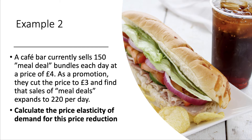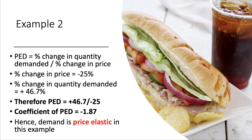Second example: a café bar currently sells 150 meal deal bundles each day at a price of £4. As a promotion, they cut the price to £3 and find that sales expand to 220 per day. Again, calculate the PED for this price cut — put the formula in: percentage change in demand over percentage change in price.